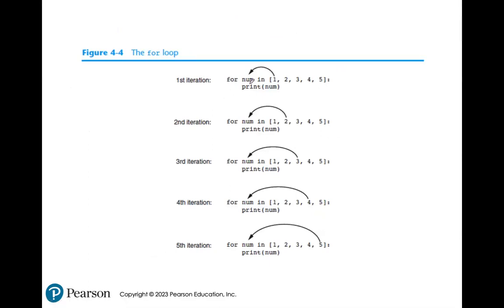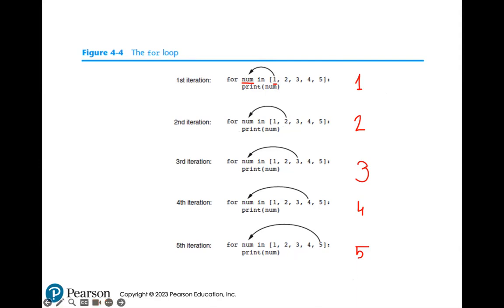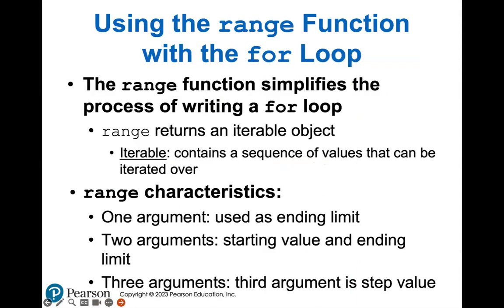Here's an example: for each number in the array [1, 2, 3, 4, 5], we print that number. During the first iteration, we look at the first number - one - and print it. Second iteration prints two, and so on through three, four, and five. We're going through each number in the list, automatically assigning it to the variable num and printing all these values using the range function.